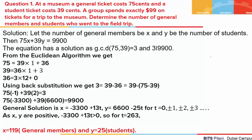At a museum, a general ticket costs 75 cents and a student ticket costs 39 cents. A group went to visit the museum and they spent exactly 99 dollars on the tickets. We have to find what was the number of general members and the number of students who went to the museum. We assume that the number of general members is x and the number of student members is y.